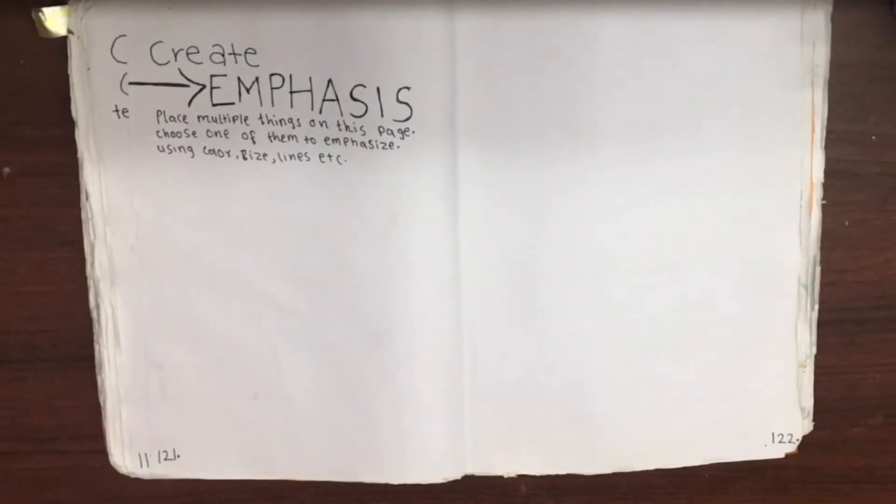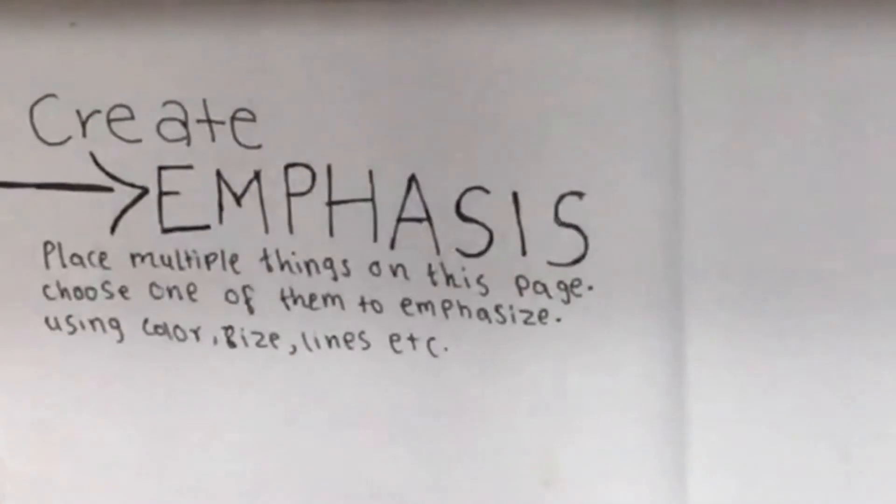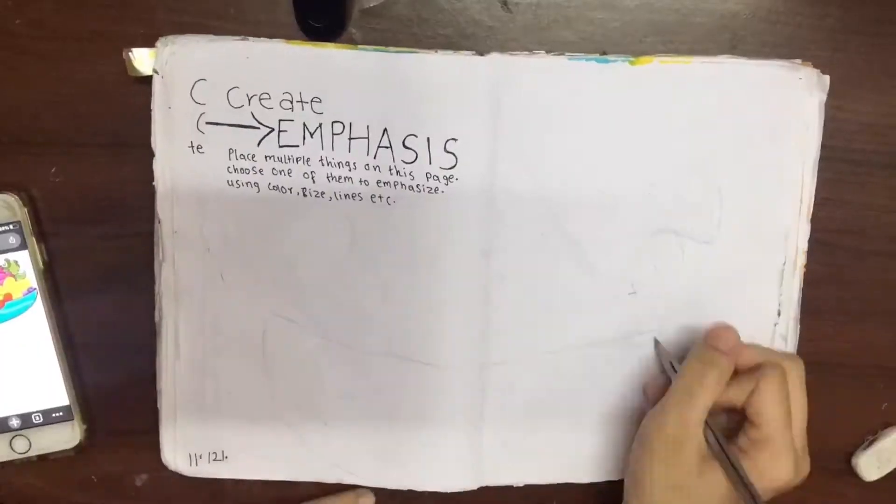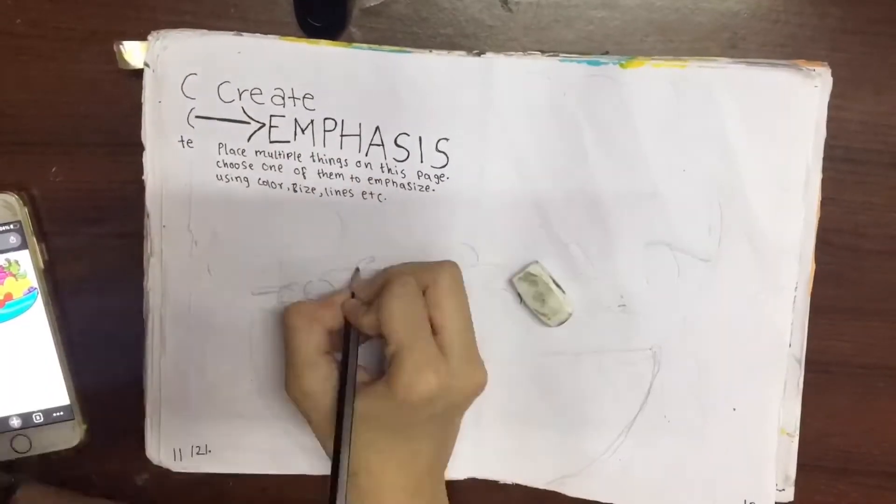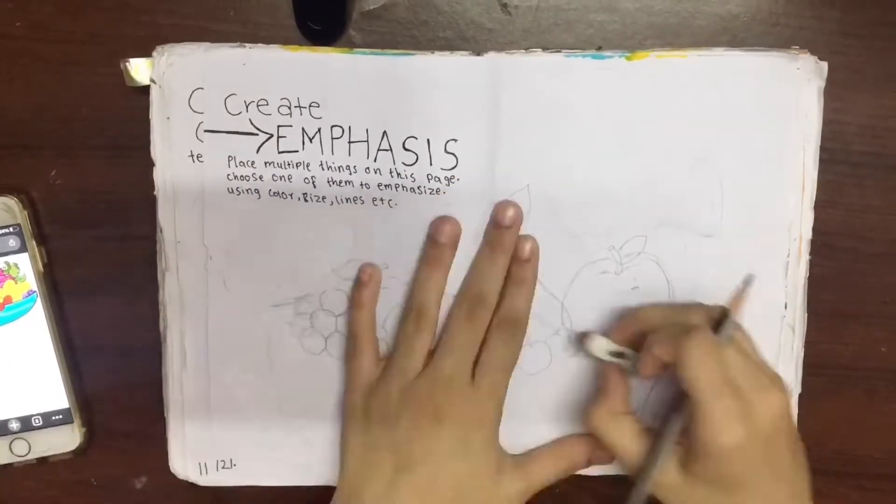The first page I decided to pick for this episode said to create emphasis: place multiple things on this page, choose one of them to emphasize using color, size, lines, etc. So I decided to draw a fruit bowl because honestly fruit bowls are not something that's very commonly drawn, and I chose that because I really like fruits a lot and eat them a lot as well.